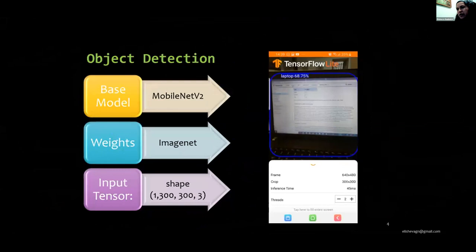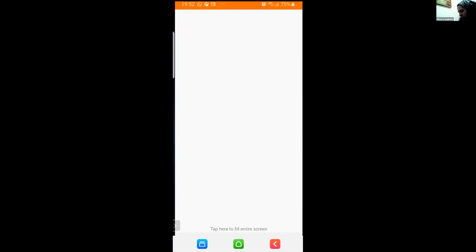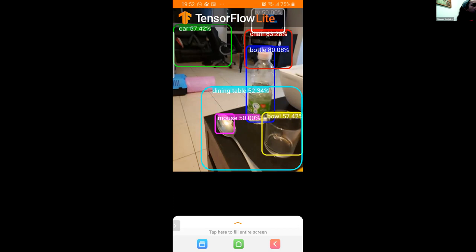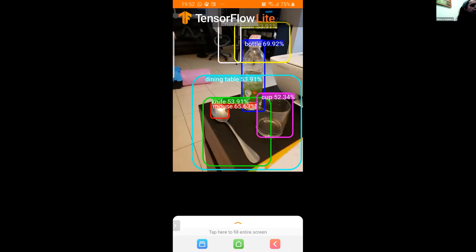This is the object detection app. The architecture model is a MobileNet version 2, pre-trained on COCO dataset.